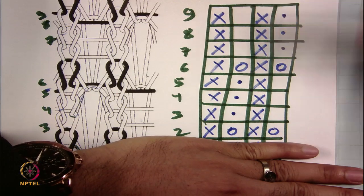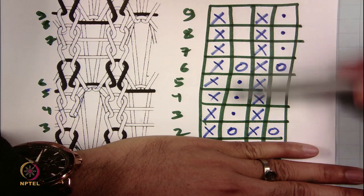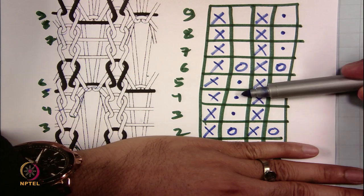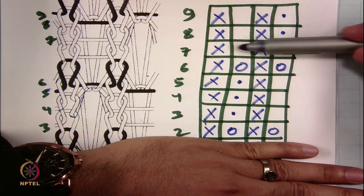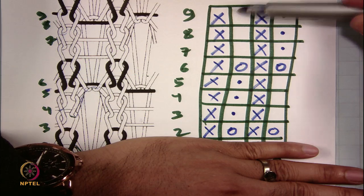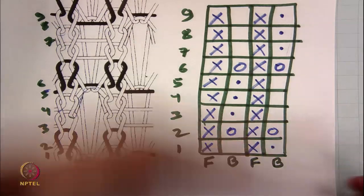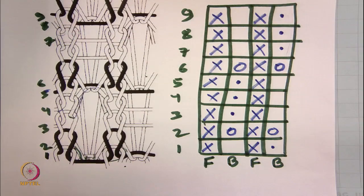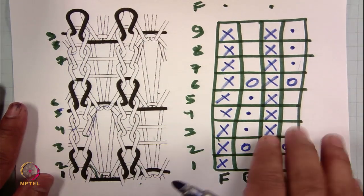If you see, this is a repeat design — three consecutive tucks, then three consecutive floats. One back bed needle makes tuck while the next consecutive back bed needle makes float, and vice versa. Although the fabric looks extremely complicated, on the diagram it is much easier to understand. I expect you to practice even more complicated structures to gain confidence in this notation.